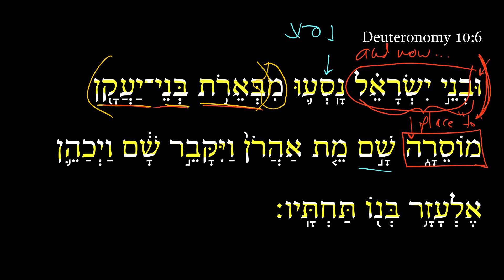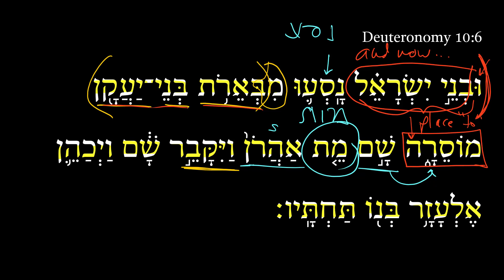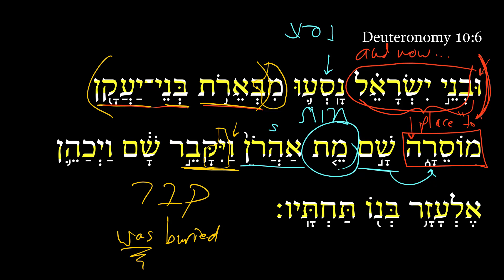Next, we get there as indicative of the place, namely Moserah. There, Aaron as the subject, died. Here we have a Qal perfect 3MS of the root moat, and Aaron is the subject — Aaron died. And he was buried. Here's a Nifal — notice the yod-aleph preformatives here. The root is Kavar, so we have a Nifal imperfect with a vav consecutive, 3MS of the root Kavar. And he was buried — in the Nifal you hear the passive: he was buried there.